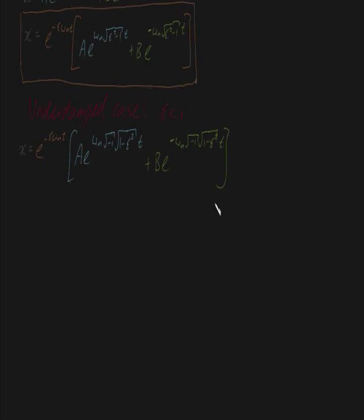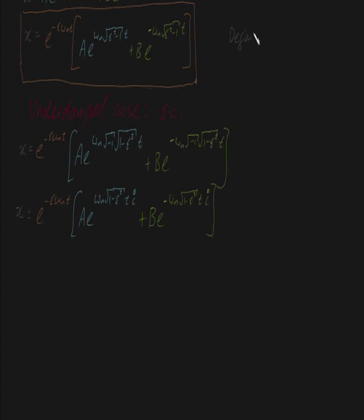The square root of minus 1 is just i, or j if you're an electrical engineer. We can write this as x equal to this expression. I'm going to define the coefficient of t times i here as a new term: I'll call it omega d, defined as omega n times the square root of 1 minus zeta squared. This will simplify things considerably. Omega d stands for the damped natural frequency, but I'll be exploring more of the reasons for why we call it this shortly.